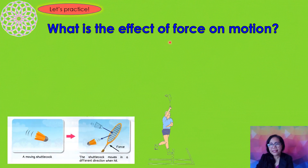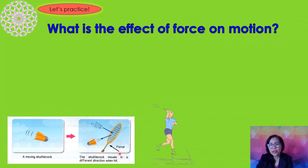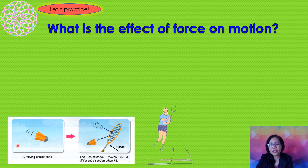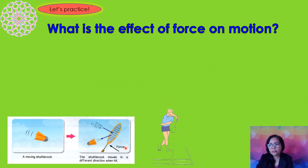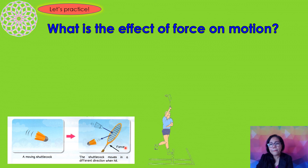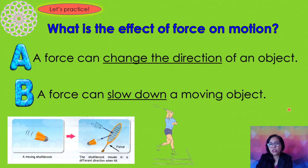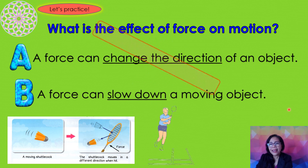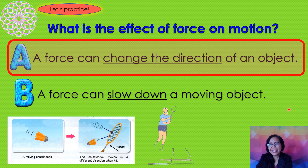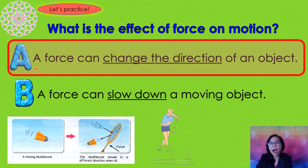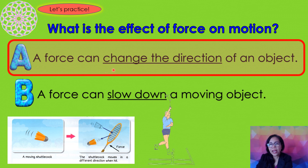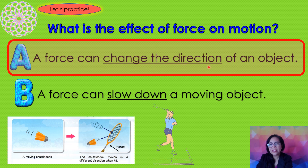What is the effect of force on motion? Look at this picture. This is a moving shuttlecock. When you apply force on it — after you hit it with a badminton racket — what will happen? Choose between letter A and letter B. The correct answer is letter A — a force can change the direction of an object. Good!